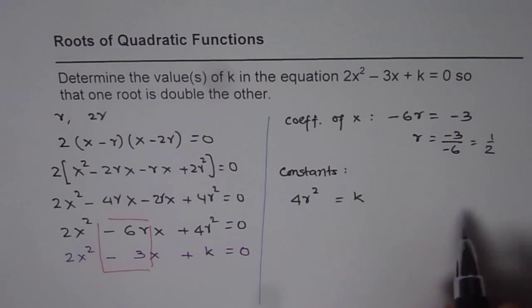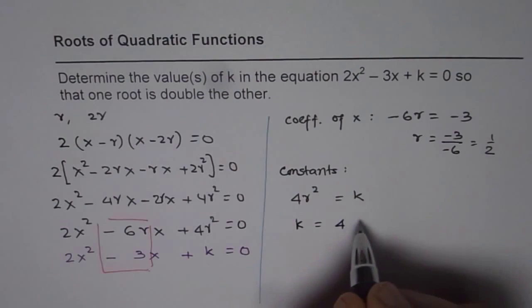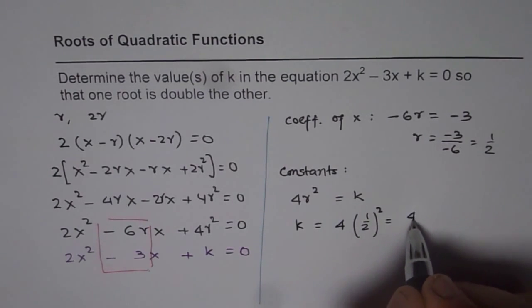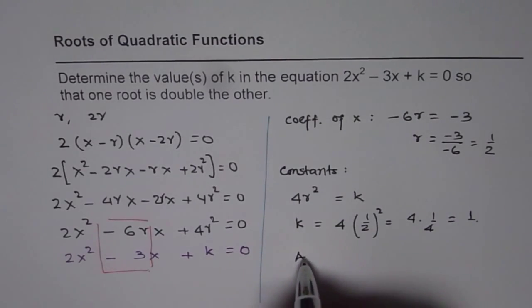Now, r is half, correct? So, what is k equals to? We can say k equals to 4 times half square, right? Which is 4 times 1 over 4 or 1. So, therefore, we get one answer. That is k equals to 1.